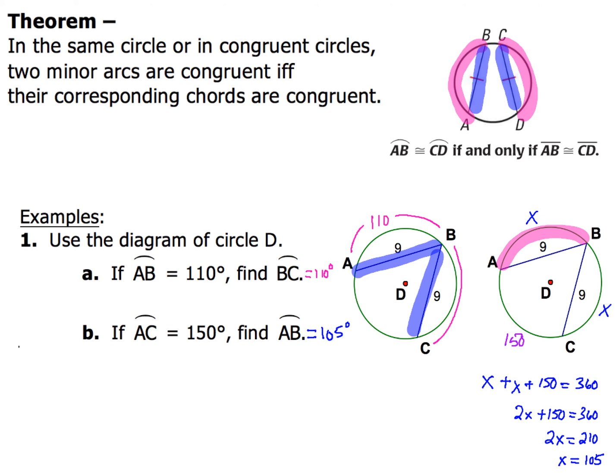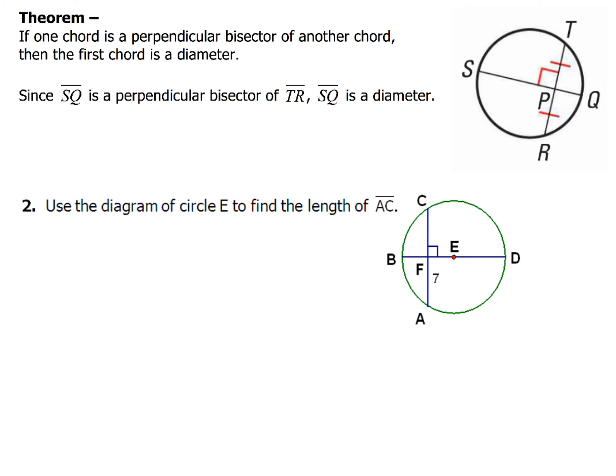Now that's the first theorem. Here we're going to take a look at a chord that is going to be perpendicular bisector of another chord. Then the first chord is going to be the diameter. Since SQ is perpendicular to TR, it's the perpendicular bisector, then SQ is going to be the diameter.